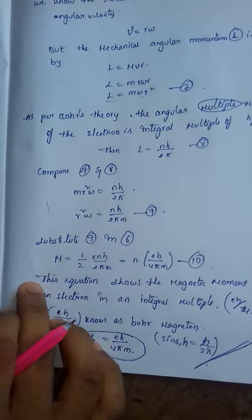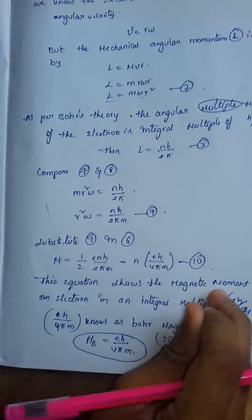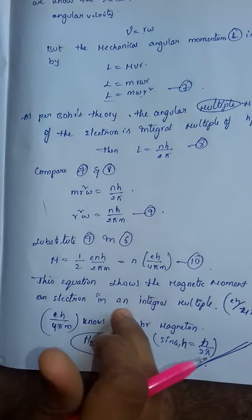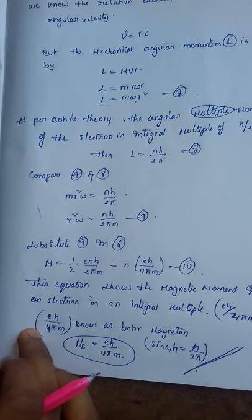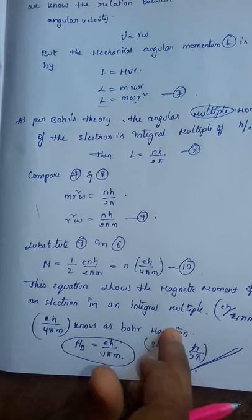From this equation, the magnetic moment of an electron is an integral multiple of E h by 4π M. E h by 4π M is known as the Bohr magneton.